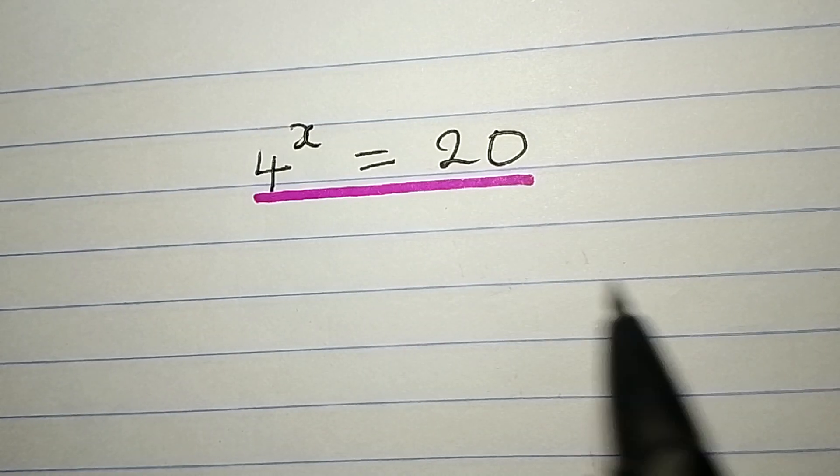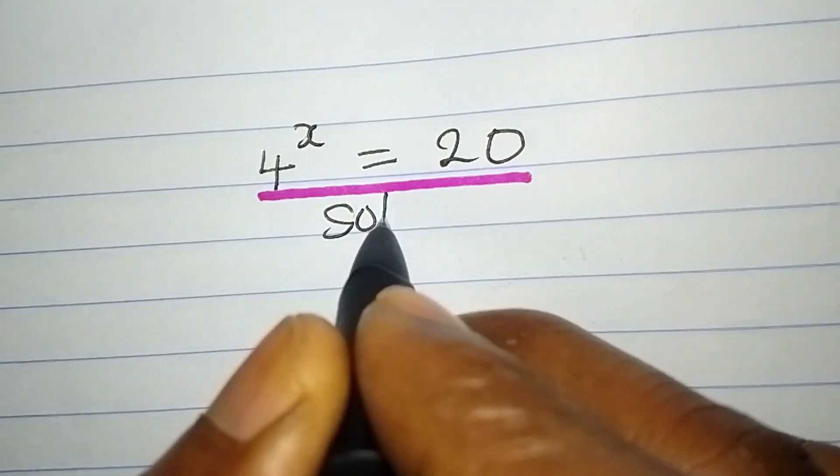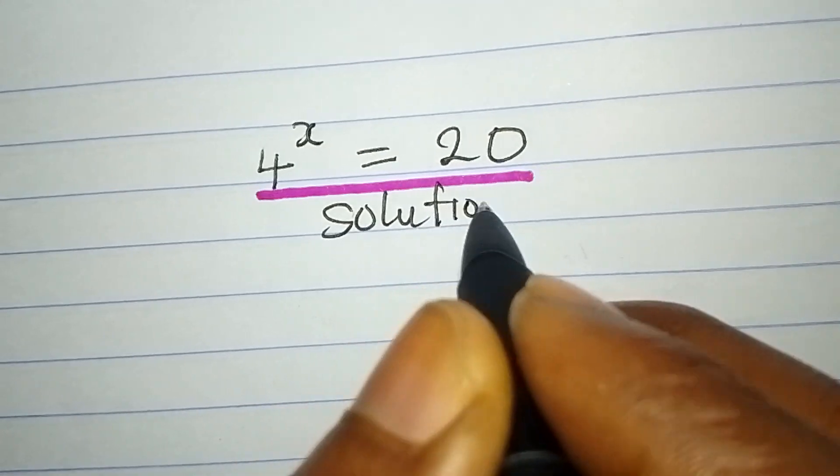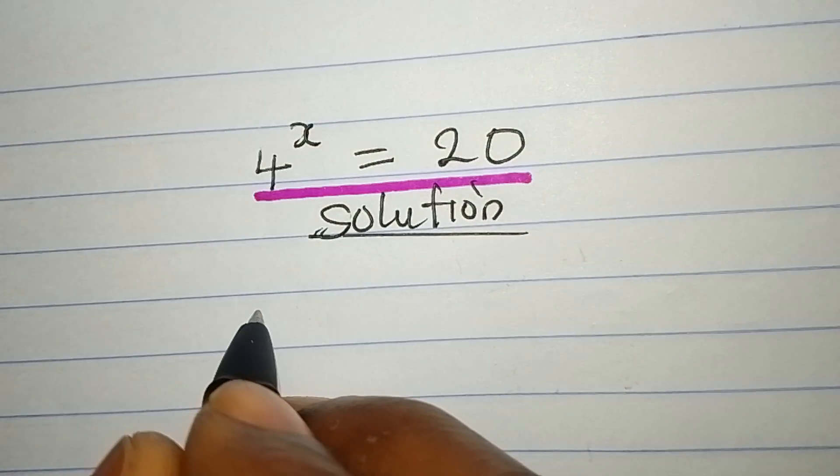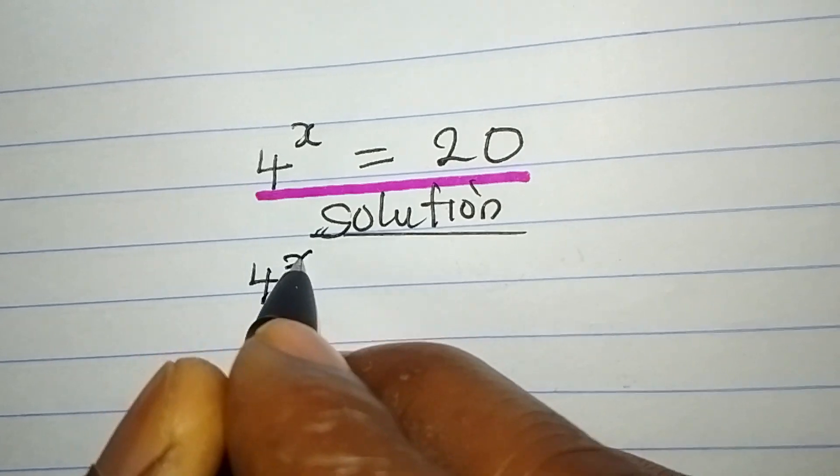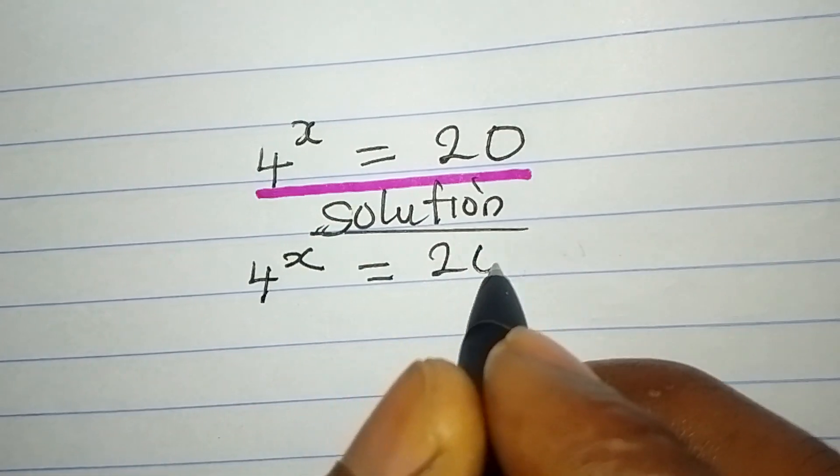Hello everyone. Let's provide the solution to this problem. We have 4 to the power of x equals 20.